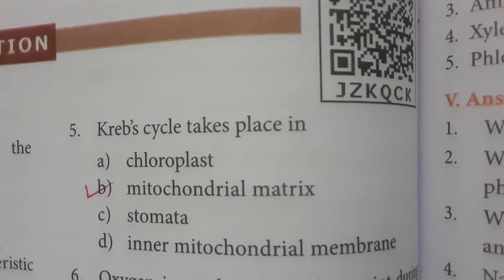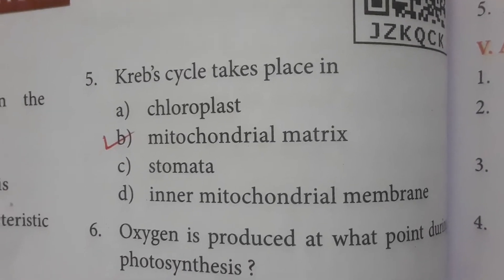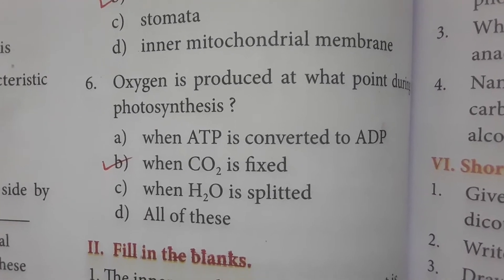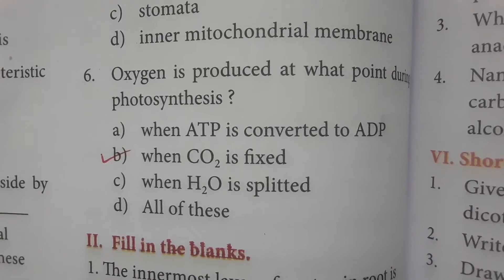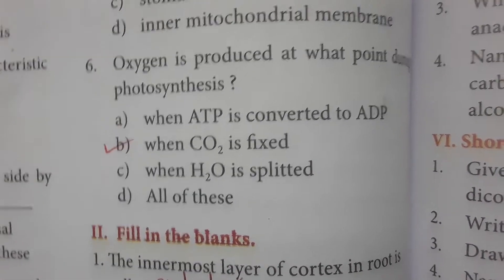Krebs cycle takes place in the mitochondrial matrix. Oxygen is produced during photosynthesis when CO2 is fixed.